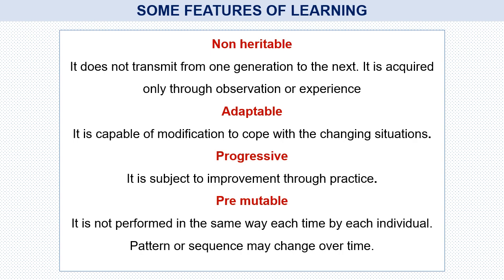Learning behavior is adaptable — it is capable of modification to cope with changing situations. It is progressive, subject to improvement through practice. It is also permutable. In case of innate behavior, it is a fixed action pattern type, meaning after receiving the stimulus, the response is always the same. But in case of learning, it is not fixed action type — the pattern or sequence may change over time.